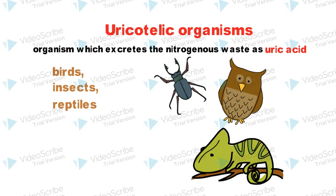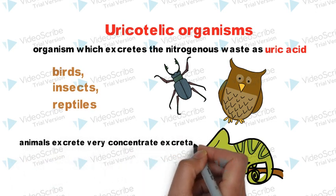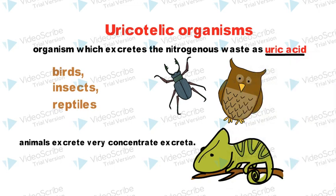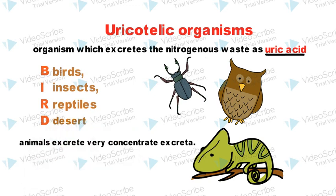These are the animals that excrete very concentrated excreta, and uric acid is also very concentrated. The trick to remember these organisms is the word BIRD, where B stands for birds, I for insects, R for reptiles and D for desert. Most of the reptiles are found in deserts, and there is scarcity of water in deserts, so animals excrete very concentrated excreta.